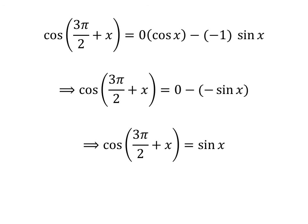So cosine of 3 times pi upon 2 plus x is equal to 0 minus minus sine of x, which is equal to sine of x. So the value of cosine of 3 times pi upon 2 plus x is equal to sine of x.